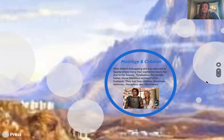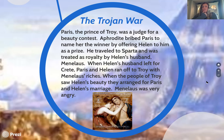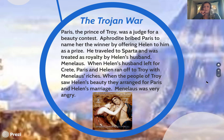Paris, the Prince of Troy, was serving as a judge for a beauty contest. Aphrodite bribed Paris to name her the winner by offering Helen to him as a prize. She said, 'If you pick me, I will give you Helen of Troy.' So Paris traveled to Sparta, was treated as a royal, and judged the contest. When Helen's husband Menelaus left for Crete, Paris and Helen ran away together.